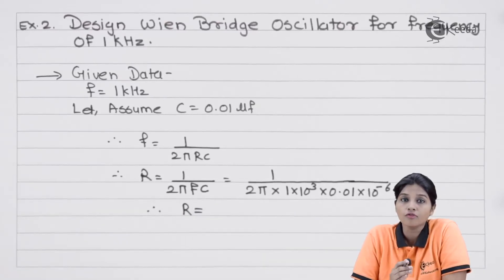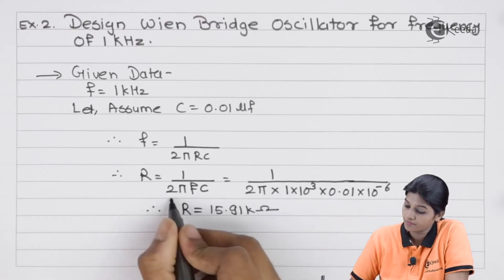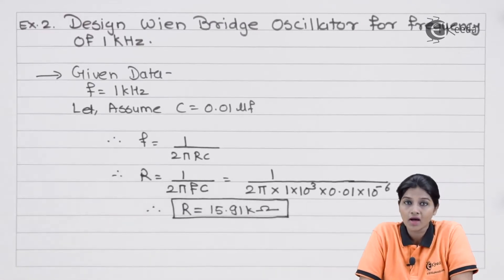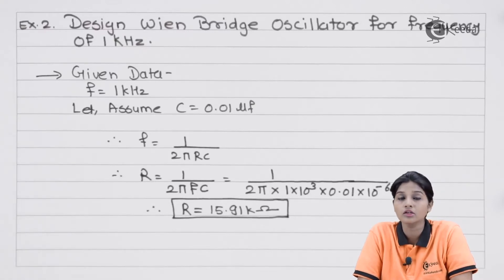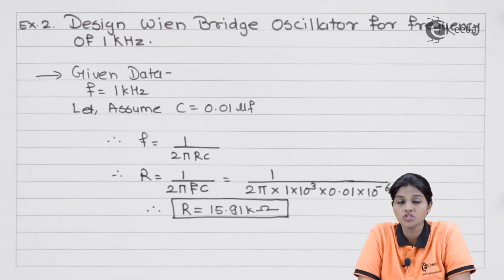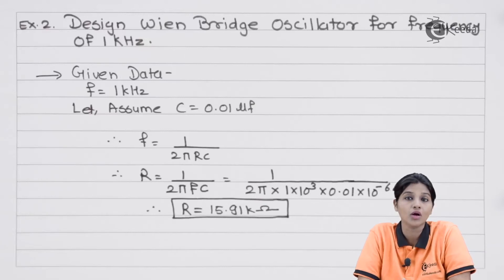Rearranging the frequency formula gives R = 1 / (2πFC). Substituting F = 1 kHz and C = 0.01 μF, we obtain R = 15.91 kΩ. With R and C determined, the next step is to find the feedback components R3 and R4 to design the op-amp circuit. For sustained oscillation, the amplifier gain A must be greater than or equal to 3, where A = 1 + R3/R4, with the op-amp in non-inverting configuration.